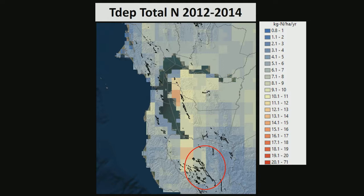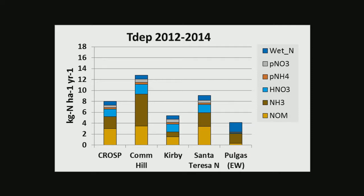We're down in this area, and it's showing a really strong gradient from the middle of San Jose down into the more rural areas. What's really good about Tdep is it breaks it down by species. The light blue is the nitric acid vapor, the dark brown is ammonia — there's a lot of ammonia in Silicon Valley coming from vehicles — so we have a sense of what fraction of different chemical species are coming down.